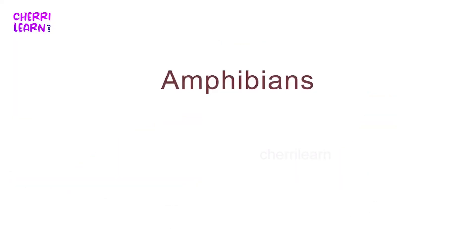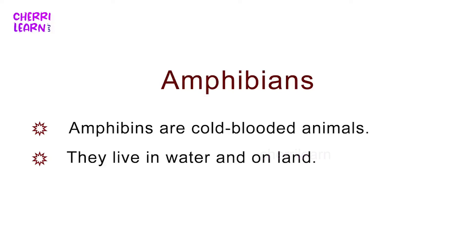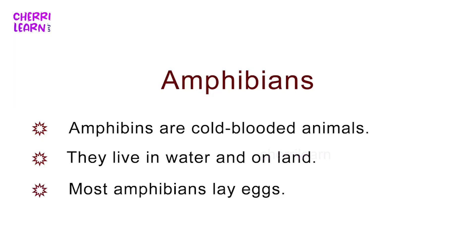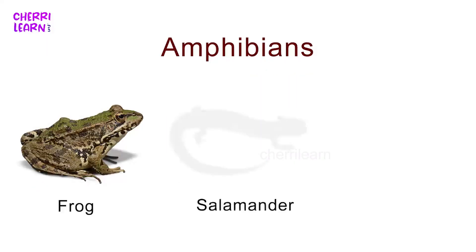Amphibians are cold-blooded animals. They live in water and on land. Most amphibians lay eggs. Examples include Frog and Salamander.